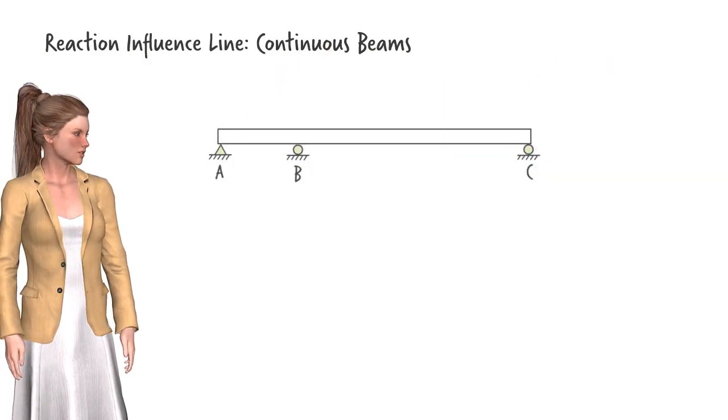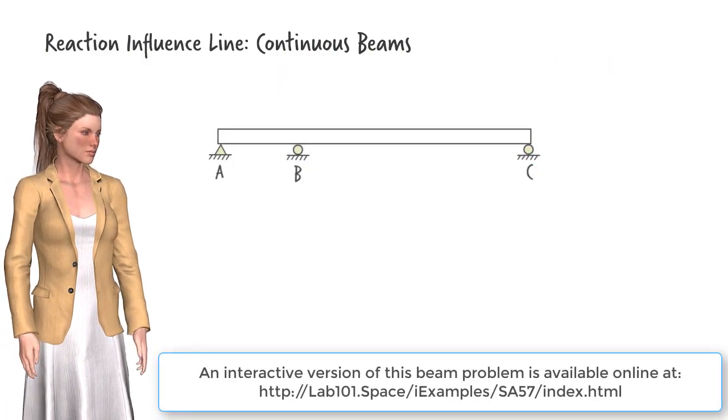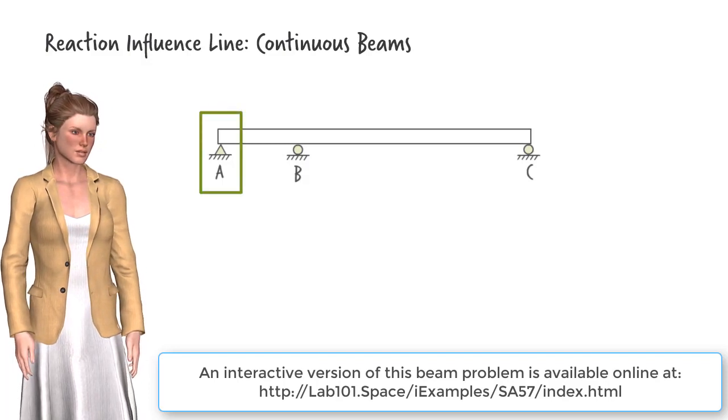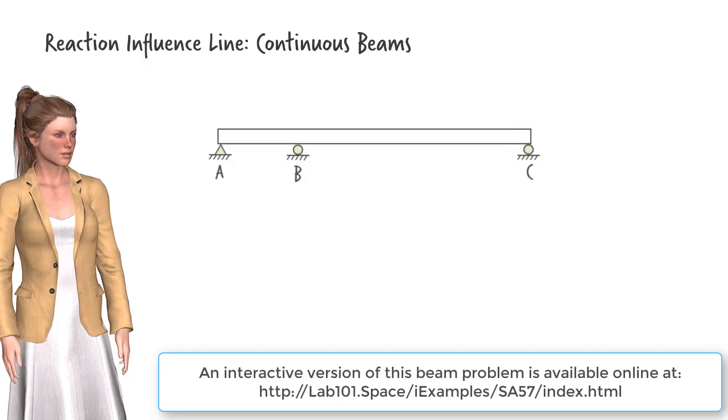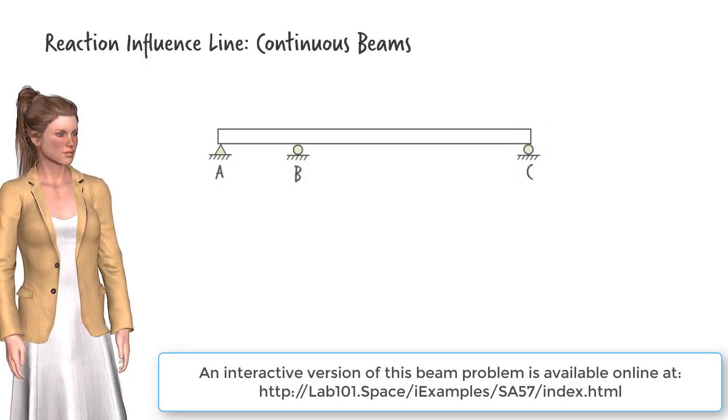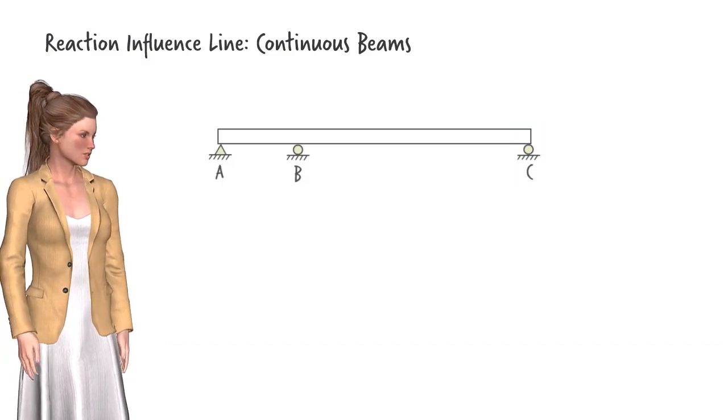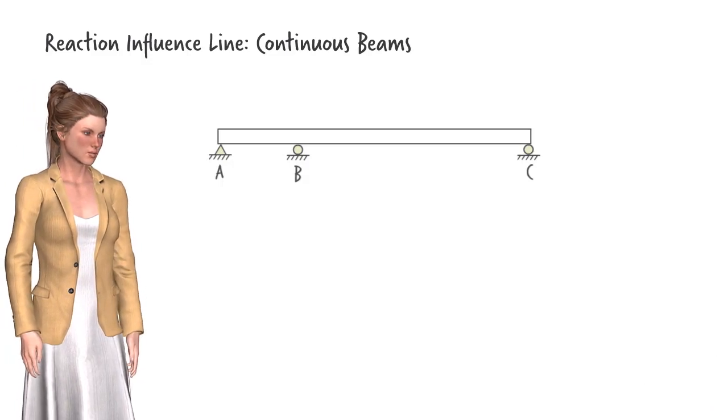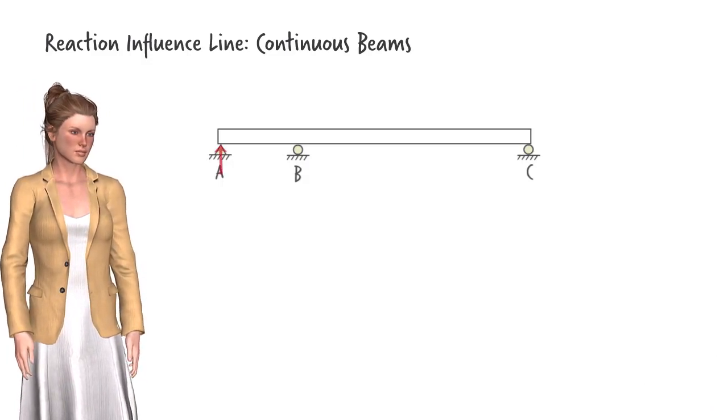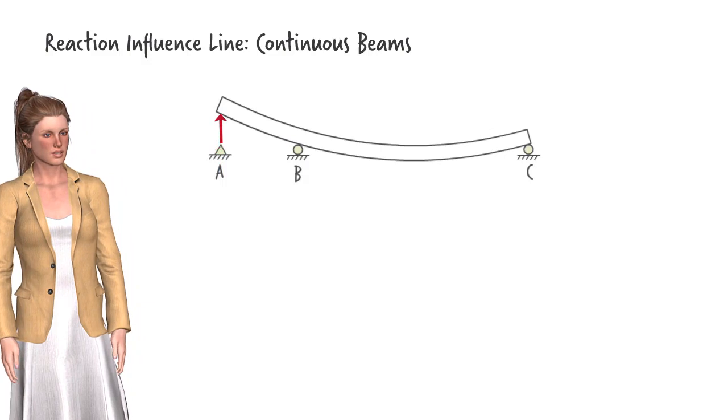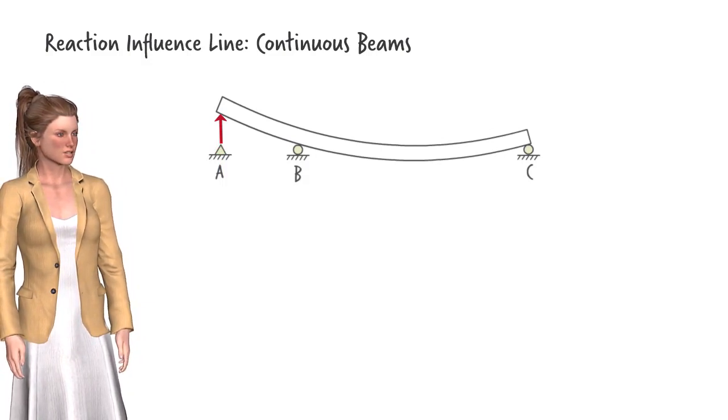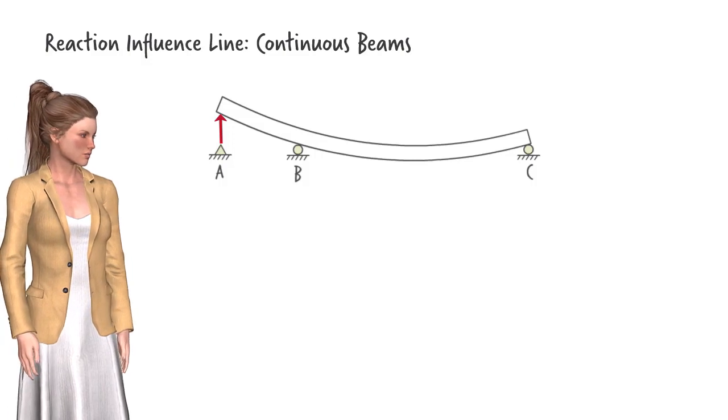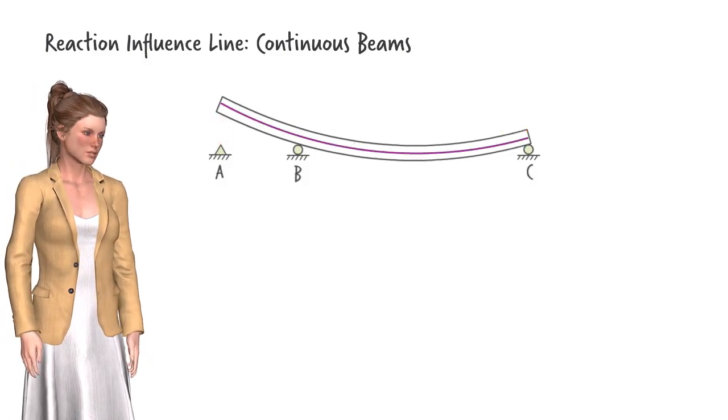Consider the two-span continuous beam. It has three vertical reactions, one at A, one at B, and one at C. We can draw each reaction influence line qualitatively with ease. Similar to the case of determinate beams, we simply push the beam upward by a unit force at the support and draw the deformation that results. While doing so, we assume the support no longer restrains the beam from moving upward.